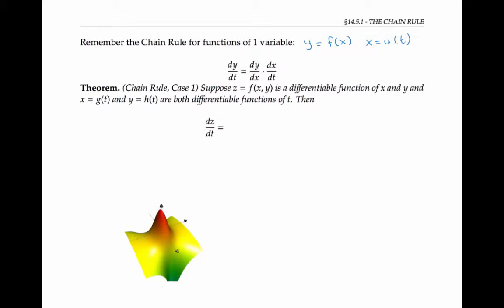A similar rule holds for functions of several variables. If z is a differentiable function of x and y, and x and y themselves are differentiable functions of t, then we can write dz/dt as partial of z with respect to x times dx/dt plus partial of z with respect to y times dy/dt.